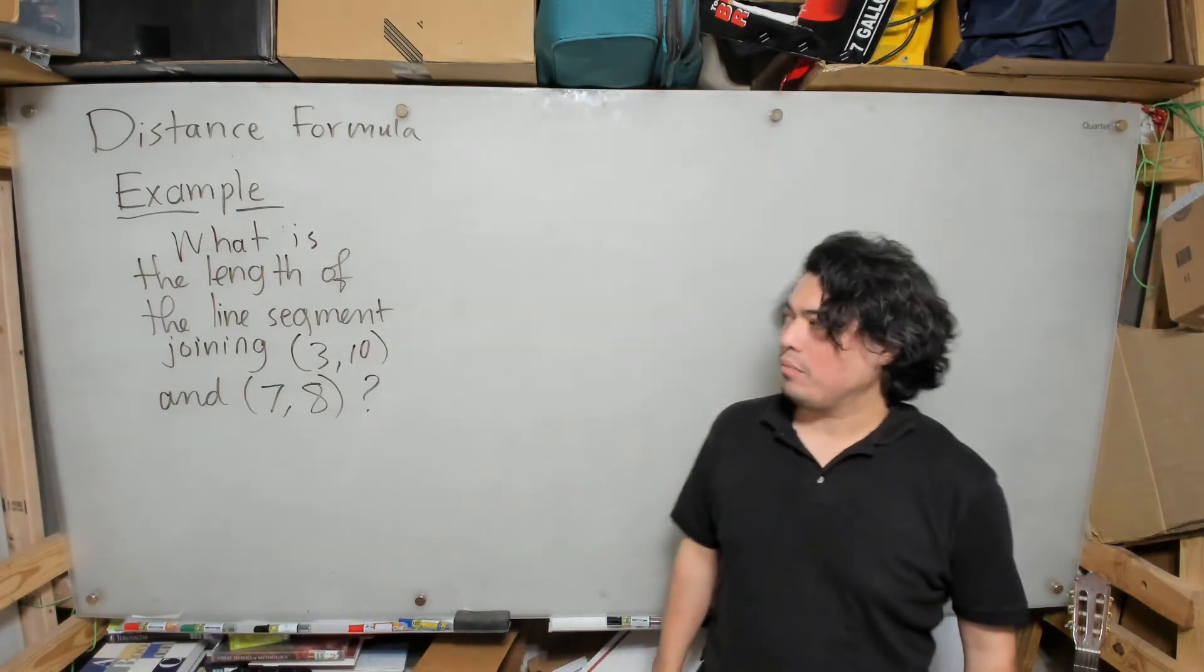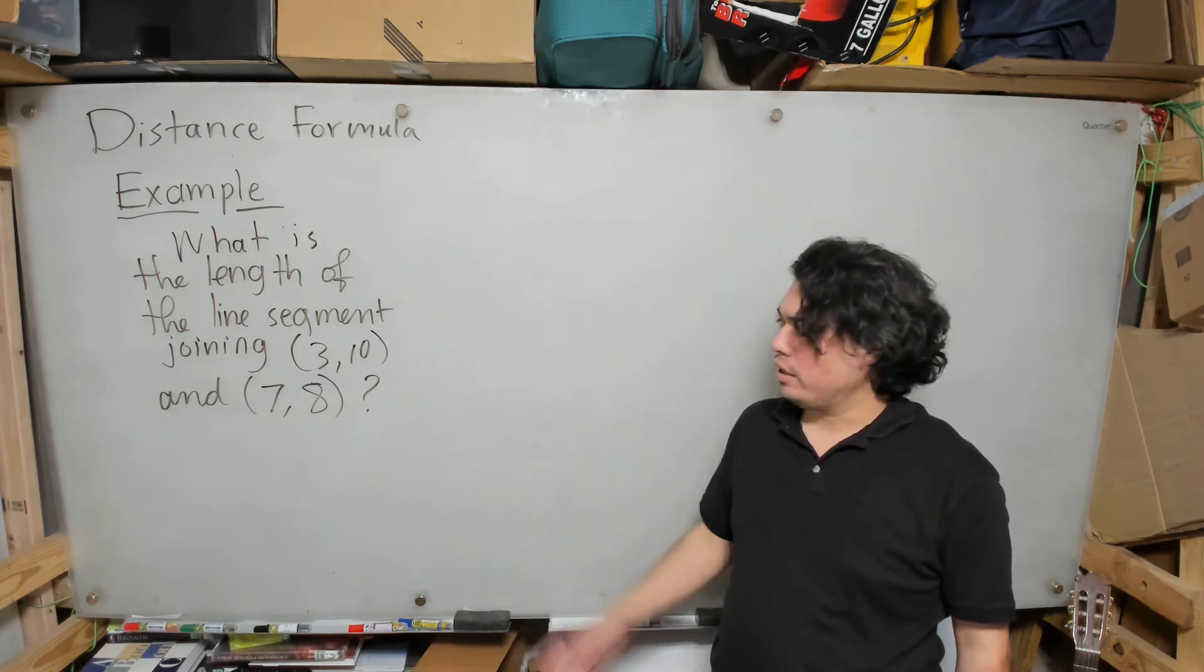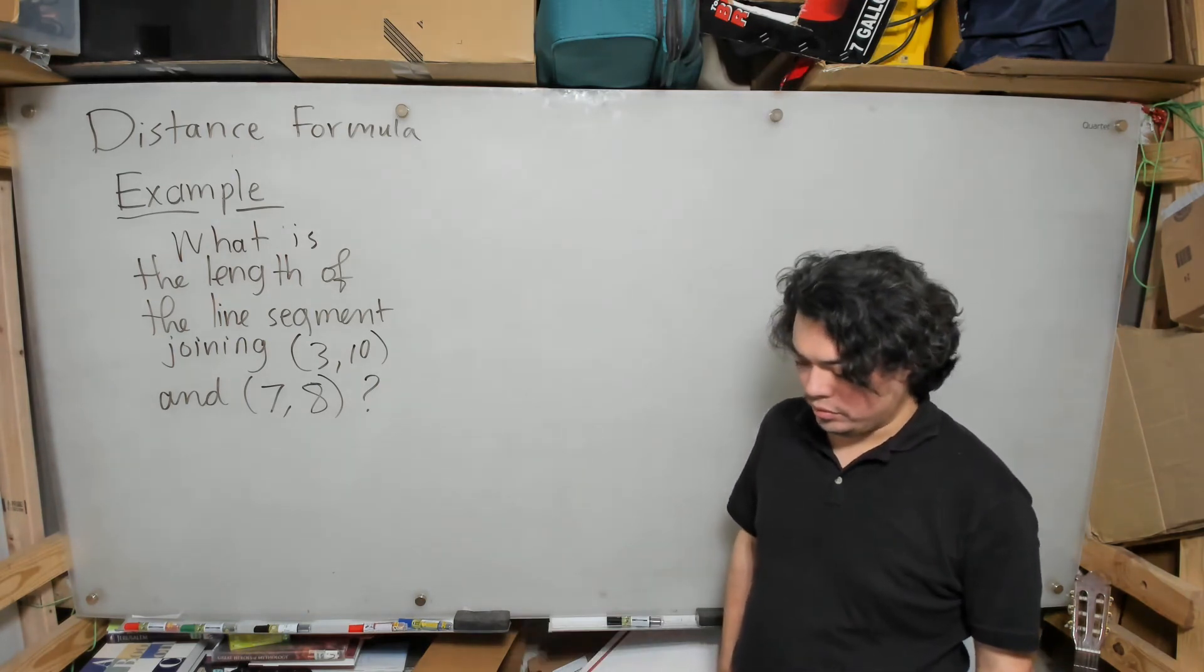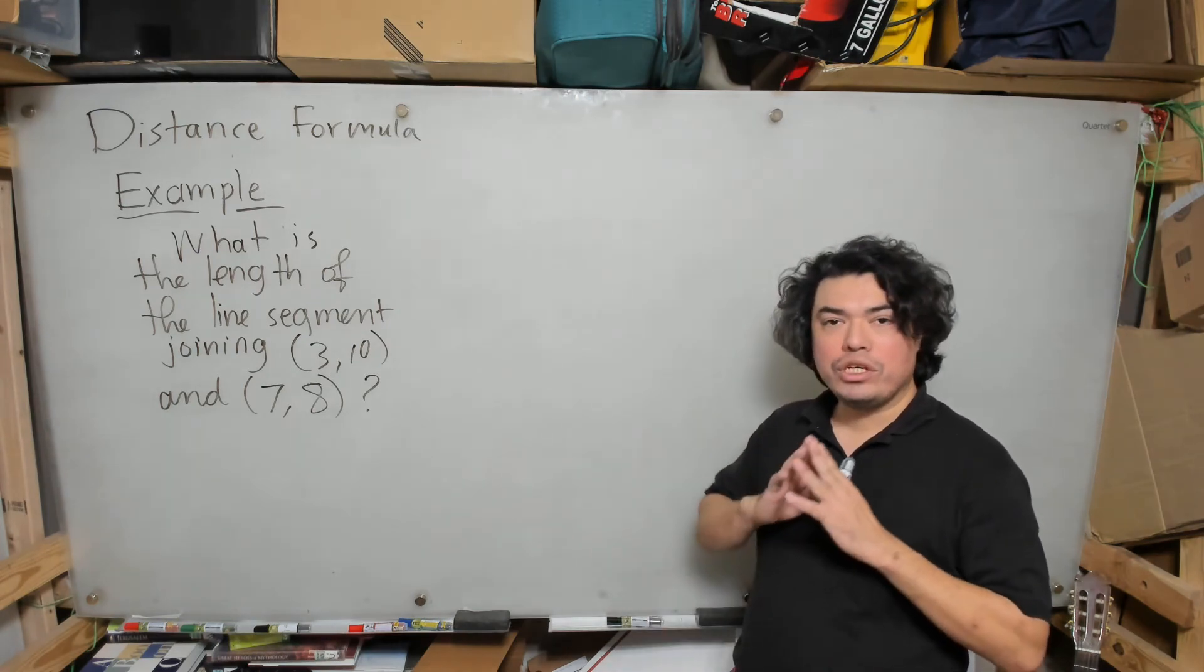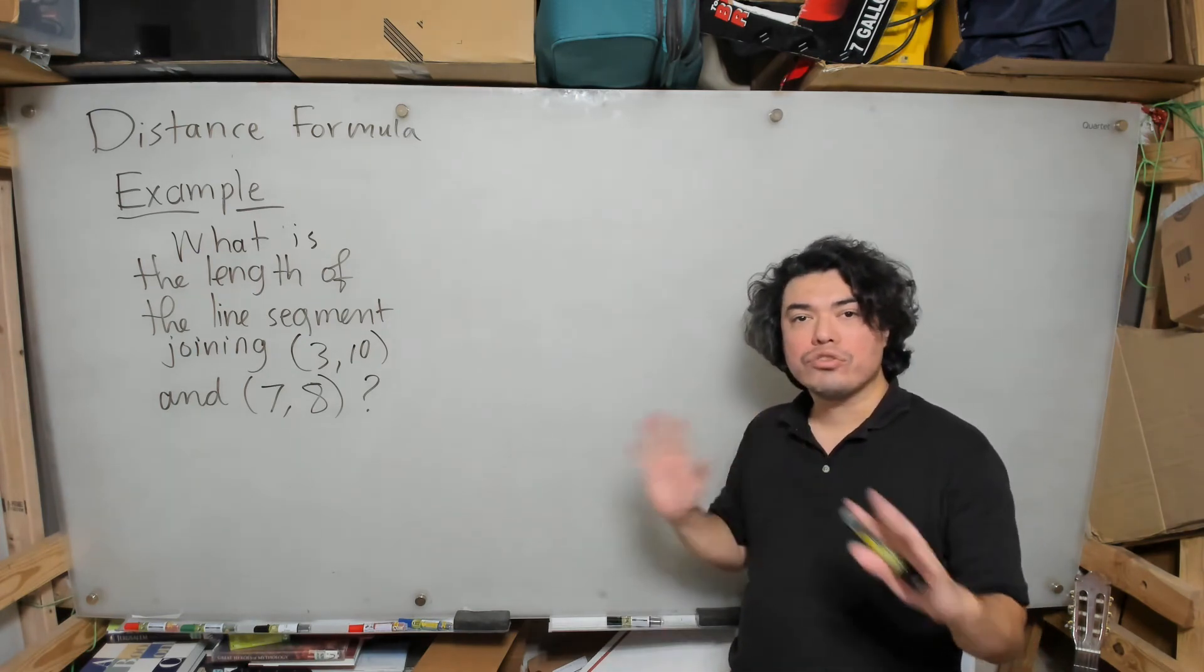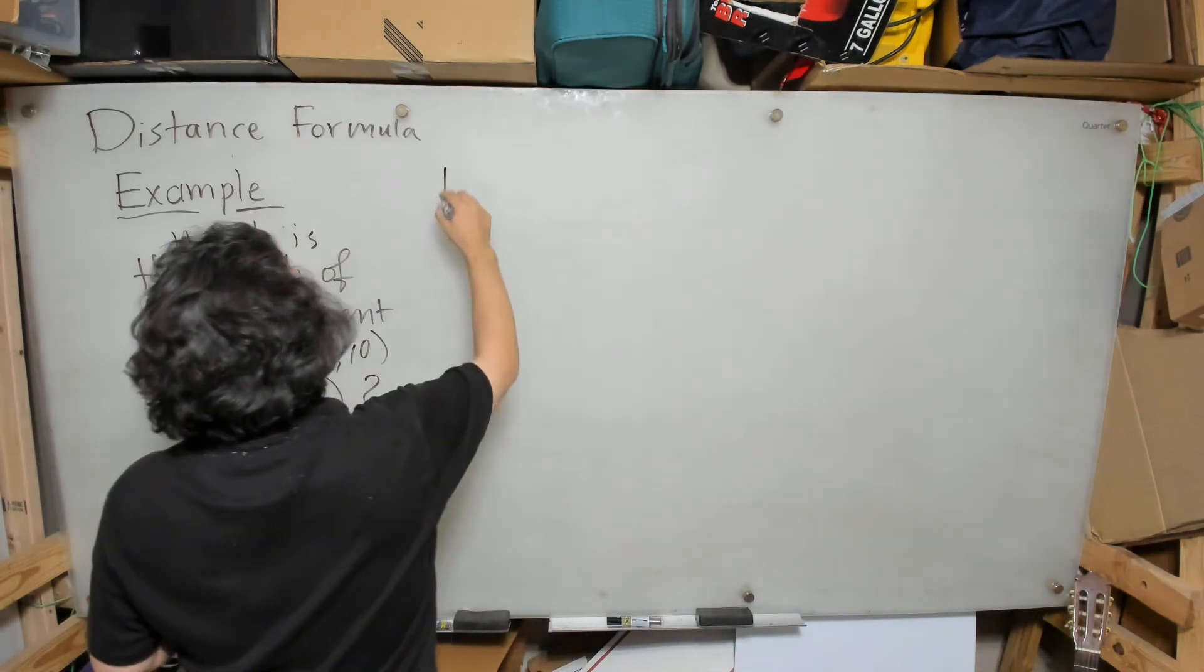So now we're going to start with this simple example: what is the length of the line segment joining the points (3,10) and (7,8)? The first way I'm going to do it is I'm going to use the distance formula that we just calculated straight away. We're going to call this technique one.